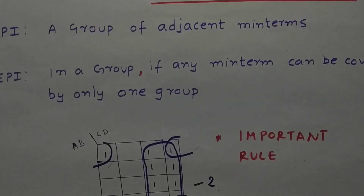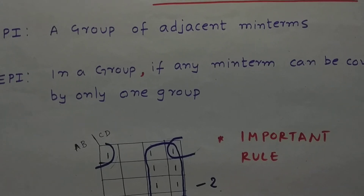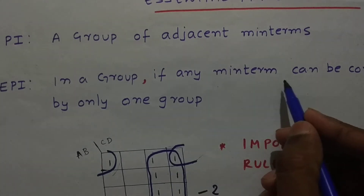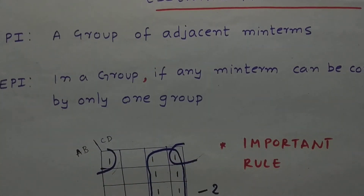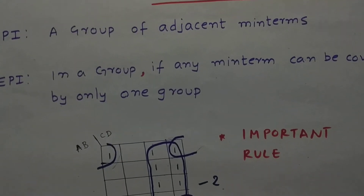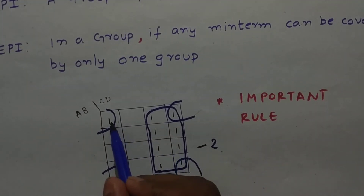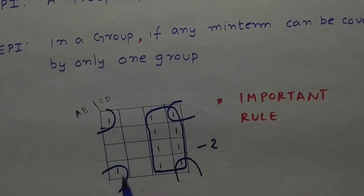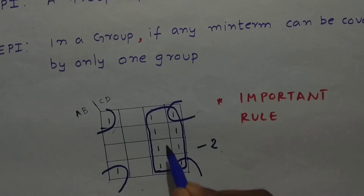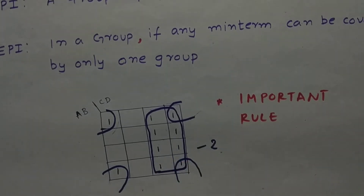Now let us go to essential prime implicants. An essential prime implicant says that if any min term in a group can be covered by only one group, then that group is an essential prime implicant. In this example, this one is only covered by the quad, so quad is an essential prime implicant. These ones are all only covered by the octate, so octate is also an essential prime implicant.